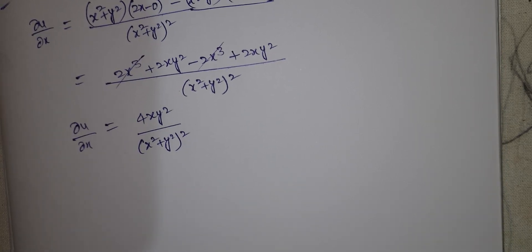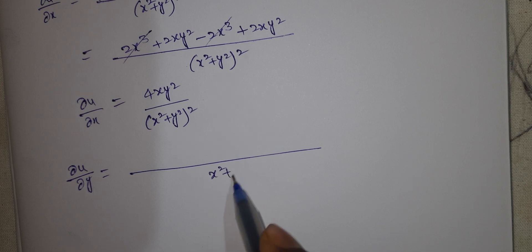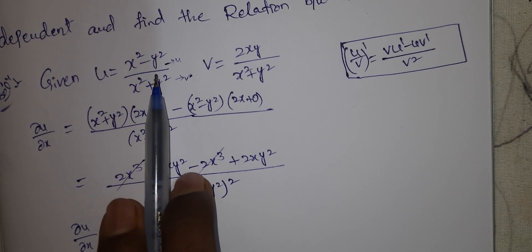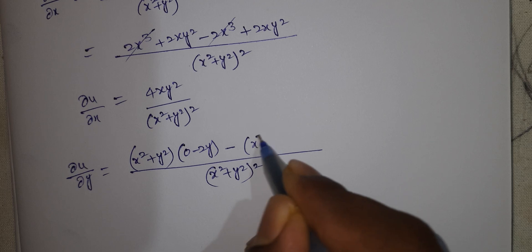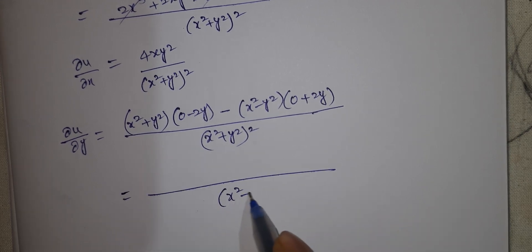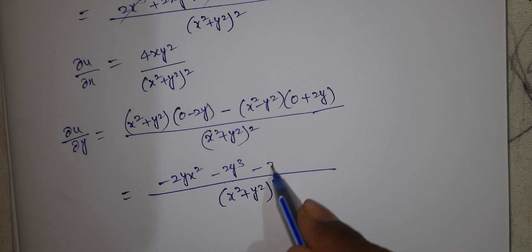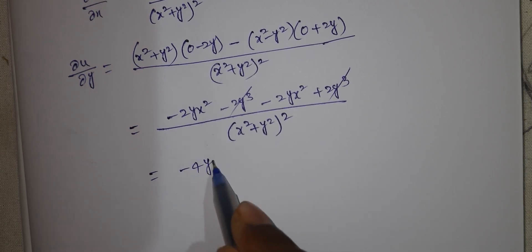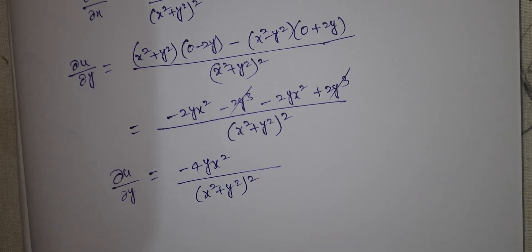Next, ∂u/∂y. Applying the same quotient rule: the numerator becomes (x² + y²)·(0 - 2y) - (x² - y²)·2y, which gives -2yx² - 2y³ - 2yx² + 2y³. After cancellation: -4yx² / (x² + y²)². So ∂u/∂y = -4x²y / (x² + y²)².